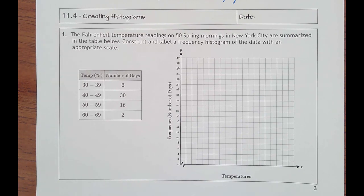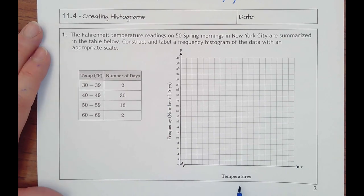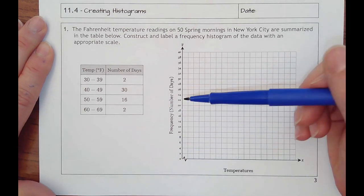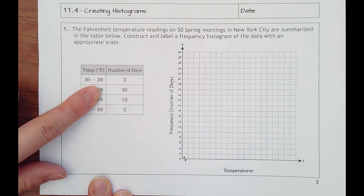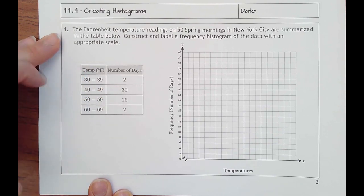So I like how they've already labeled our axes for us. We've got our temperatures down here on the x-axis and then we've got our number of days that temperature occurred. And so we've got a frequency table with ranges here. So from 30 to 39 degrees that happened on two of the days and so forth.